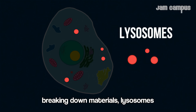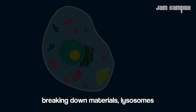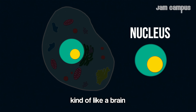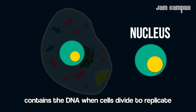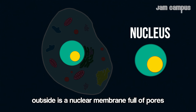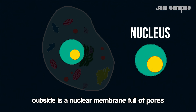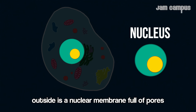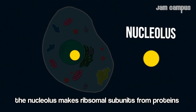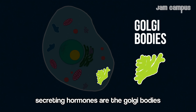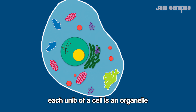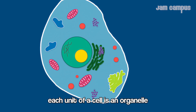Lysosomes break down materials. The nucleus controls the cell, kind of like a brain — it contains the DNA used when cells divide to replicate. Outside the nucleus is the nuclear membrane, full of pores. The nucleus also makes ribosomes, which help form proteins. Secreting hormones are the Golgi bodies. Each unit of a cell is called an organelle.